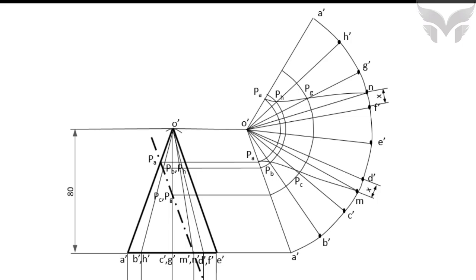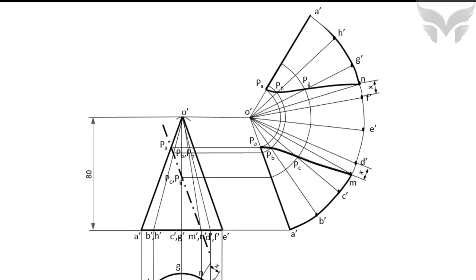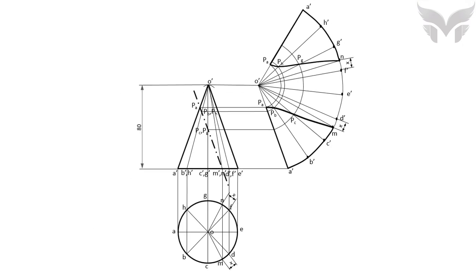Finally, darken only the region that remains after cutting the cone, except for the generators. Don't forget to give all necessary dimensions. That's all for this video. I hope you enjoyed watching. See you in the next video — till then, stay happy and keep learning.